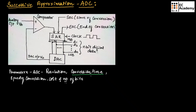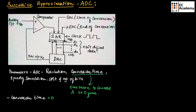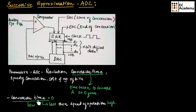The conversion time is the time taken by an ADC to convert an analog signal to digital form. Ideally, the conversion time should be equal to 0, but practically this conversion time should be as low as possible. If this conversion time is less, then the speed of operation will be high.